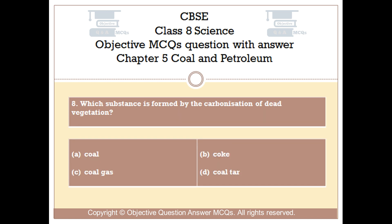Question number 8. Which substance is formed by the carbonization of dead vegetation? Option A: Coal. Option B: Coke. Option C: Coal gas. Option D: Coal tar.